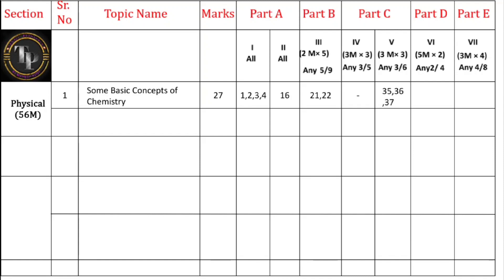For the three-mark theory questions from physical chemistry, question numbers 35, 36, and 37 belong to Some Basic Concepts of Chemistry. For Part E numerical problems, you will get three problems from this chapter — question numbers 45, 46, and 47. So totalling: 4 marks MCQs, 1 mark fill in the blank, 4 marks two-mark questions, 9 marks theory, and 9 marks numericals gives 27 marks.